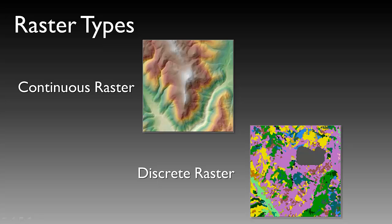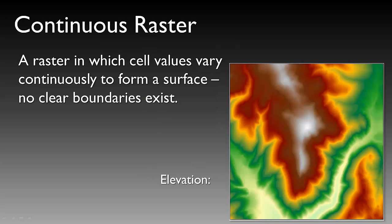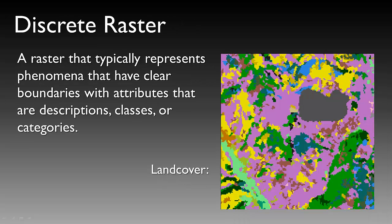Two different raster types exist: continuous raster data sets and discrete raster data sets. Continuous raster data sets are rasters in which cell values vary continuously across the surface of the Earth, with no clear boundary from one pixel to another — elevation is an example. Discrete rasters represent phenomena that have clear and concise boundaries, with attributes that are descriptions, classes, or categories.